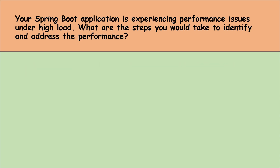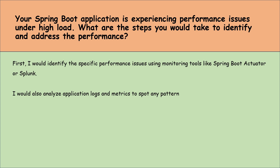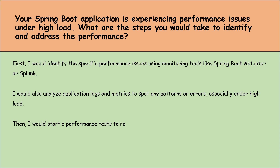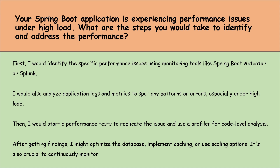Your Spring Boot application is experiencing performance issues under high load. What steps would you take to identify and address the performance? First, I would identify the specific performance issues using monitoring tools like Spring Boot Actuator or Splunk. Then I would analyze application logs and metrics to spot any patterns or errors, especially under high load. I would start a performance test to replicate the issue and use a profiler for code-level analysis. After getting findings, I might optimize the database, implement caching, or use scaling options. It's also crucial to continuously monitor the application to prevent further issues.